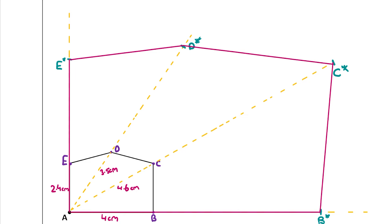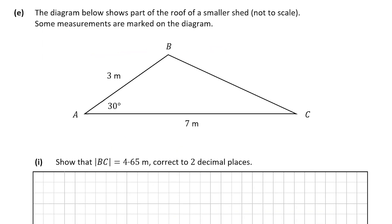It's quite difficult to draw these enlargements on screen, but your answer should look something similar. Part D was worth 10 marks. Now let's look at the next part of the question — we're shown the roof of a smaller shed and asked to show that BC is equal to 4.6 meters. The line BC is shown in the diagram.